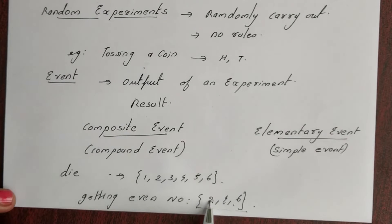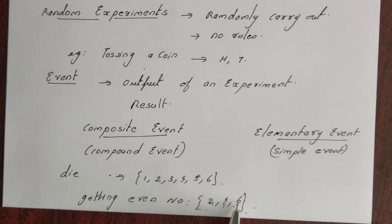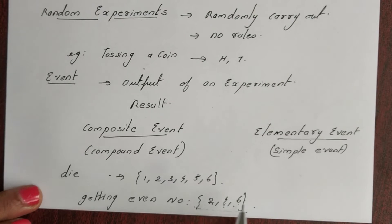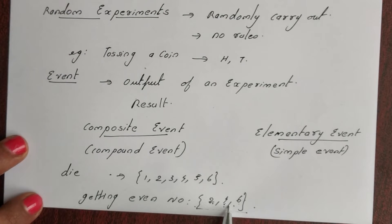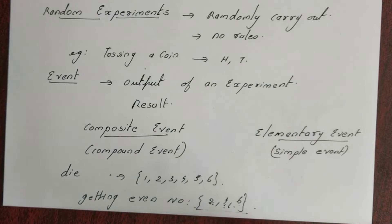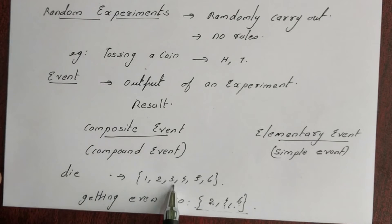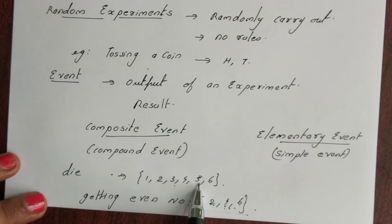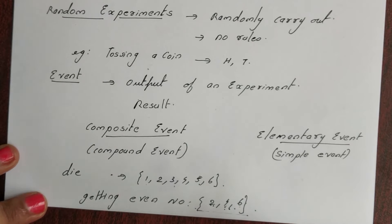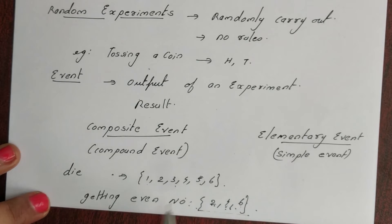The probability of getting 2, the probability of getting 4, and the probability of getting 6 — if we combine 3 events, this is a combination of events, which is a composite event. The probability of getting an odd number covers 1, 3, and 5. That is also a composite event — we can split these events. Composite events can be split into smaller events.